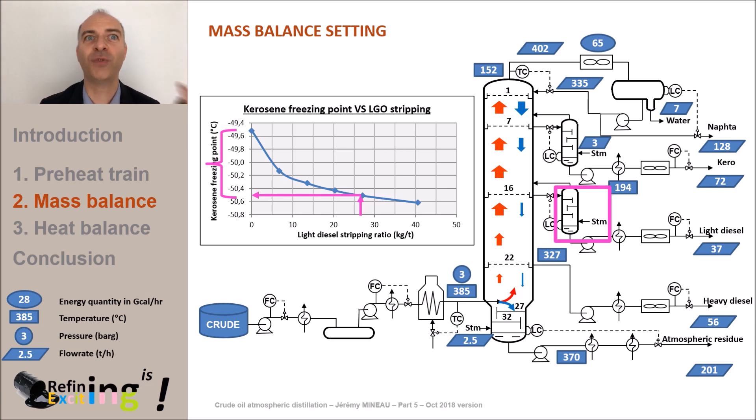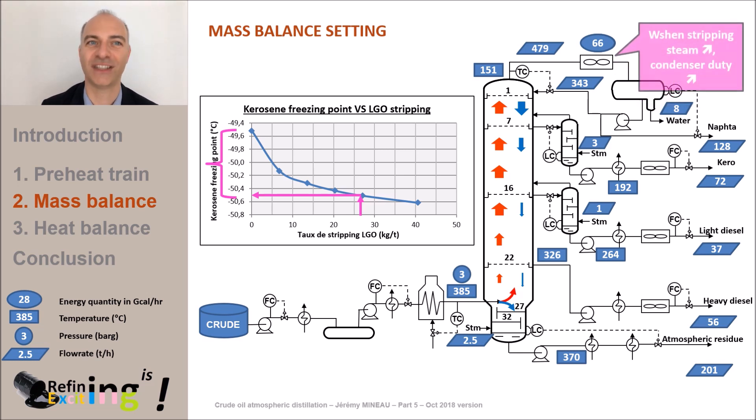I remind you that stripping a hydrocarbon cut only influences the quantity of light molecules on this cut, but does no effect on the heavy tail of this cut. Be careful! When we inject stripping steam in the column, we will find this steam at the head of the column and the calories that the condenser will increase since we must condense this stripping steam.